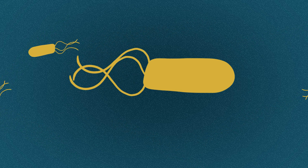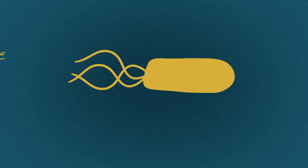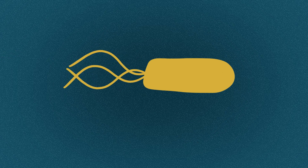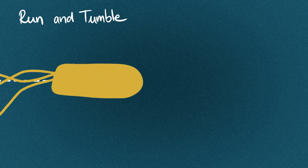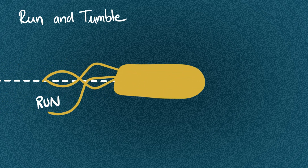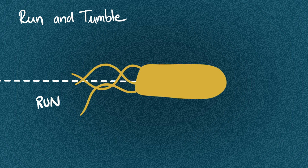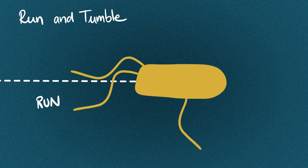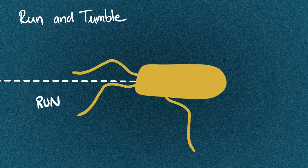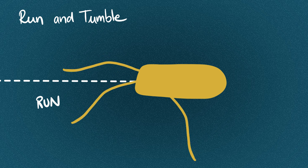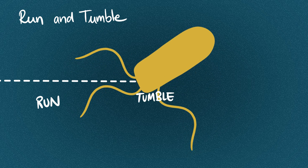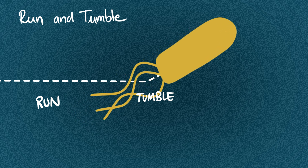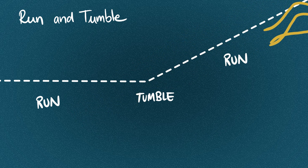Now we have seen how these organisms propel, but how do they navigate the environment to find food or escape danger? E. coli have evolved a strategy called run and tumble to change their swimming direction. At some random point in time, one of the motors starts spinning in the opposite direction and the flagella bundle dissolves. This causes the bacterium to tumble and change direction. When the flagella bundle again, the E. coli starts moving along a new direction.